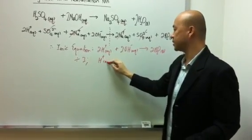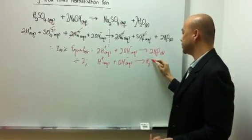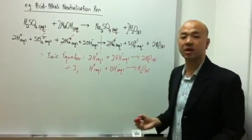So it becomes H+ plus OH- to give you H2O. This will then be your ionic equation.